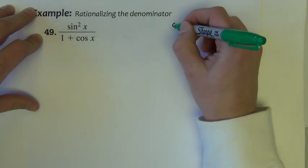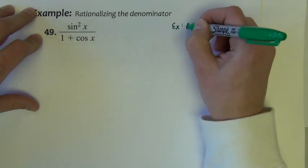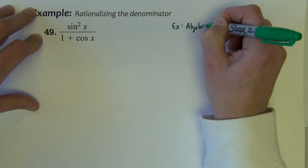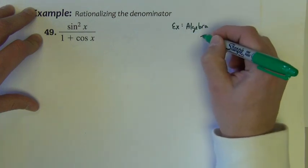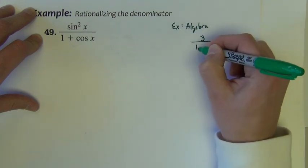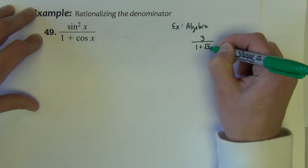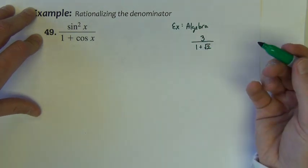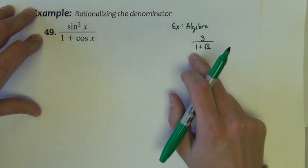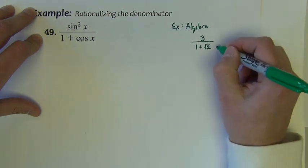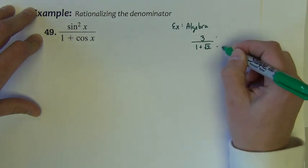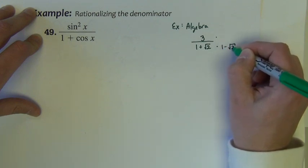For example, an algebra example. If I were to give you like 3 divided by 1 plus the square root of 2. And I asked you to rationalize the denominator. Well, seeing a binomial, we'd all know to rationalize this by multiplying the numerator by the conjugate pair, 1 minus the square root of 2.